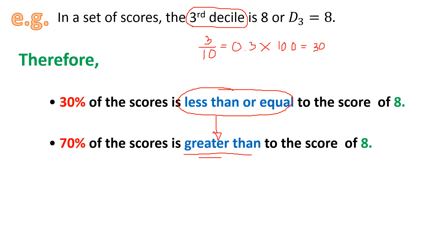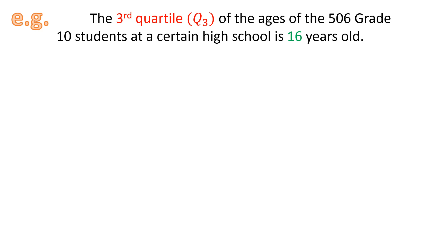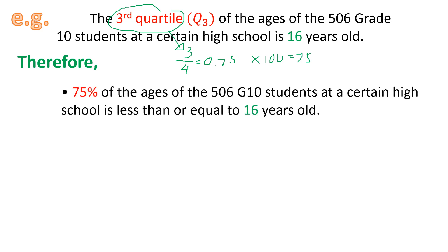Let's have something different. The third quartile of the ages of the 506 grade 10 students at a certain high school is 16 years old. So what does this imply? Since we're talking about third quartile, the third quartile in percent is 3 divided by 4, because we're talking about quartile. Dividing 3 by 4 gives us 0.75. Multiplying by 100 results in 75. Therefore, we may conclude that 75% of the ages of the 506 grade 10 students at a certain high school is less than or equal to 16 years old.